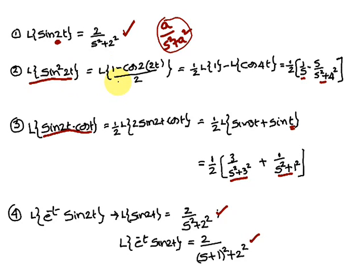Laplace of sin²(2t): write sin²(2t) as (1 - cos(4t))/2, since we substitute 2t in place of t. Therefore this becomes (1/2) · [Laplace of 1 - Laplace of cos(4t)]. Laplace of 1 is 1/s, and Laplace of cos(4t) is s/(s² + 16).